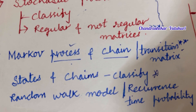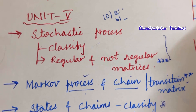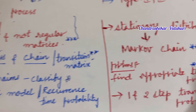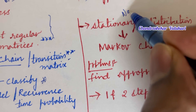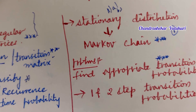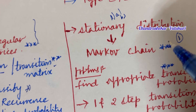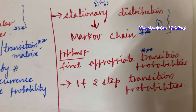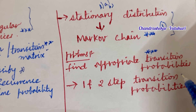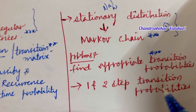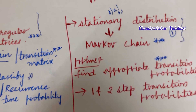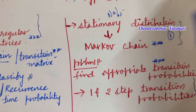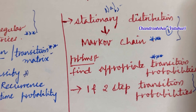Random walk model and recurrence time probability may be the B question this time in 10AB. You also have 11AB being asked from Unit 5 — it's all about stationary distribution, and Markov chain is said to be the topmost and most important question. You are going to get problems related to transition probabilities and one and two step transition probabilities, which are sure to appear in 11AB or as a full 11th question if the problem is lengthy in structure.